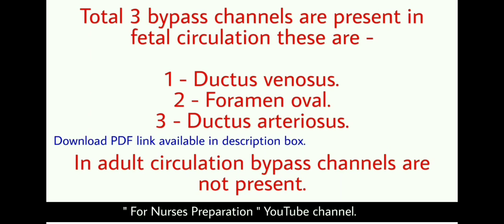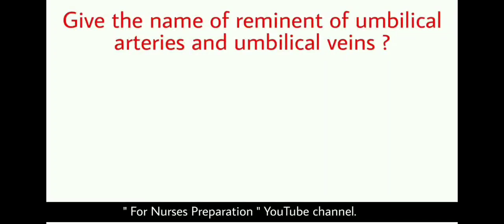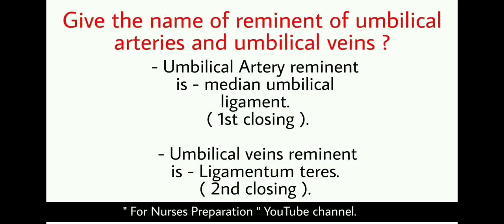Friends, you can download this video's PDF file. Its link is available in the description box. Next question: Give the name of the remnant of umbilical arteries and umbilical veins. Answer: The umbilical artery remnant is the median umbilical ligament and it is first to close. The umbilical vein's remnant is known as ligamentum teres, and it is second to close. Remnant means the small parts left over when the main part has disappeared or been destroyed.